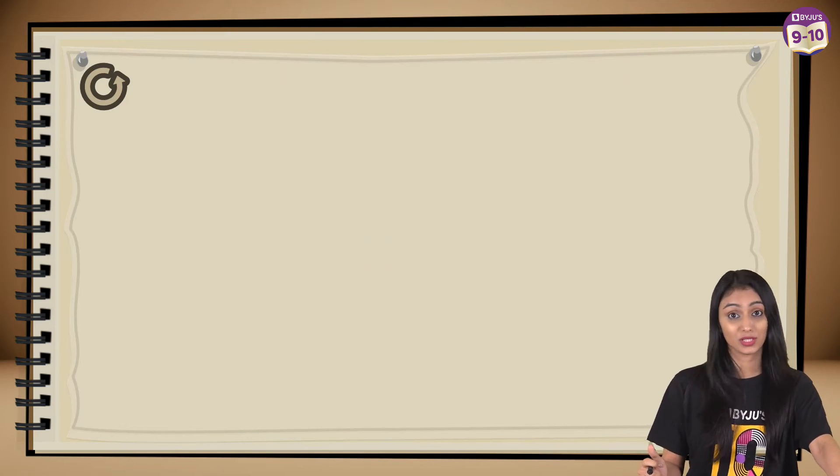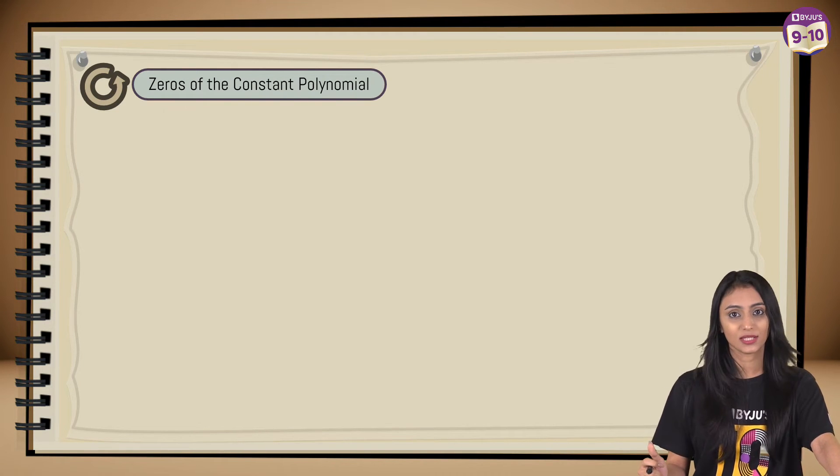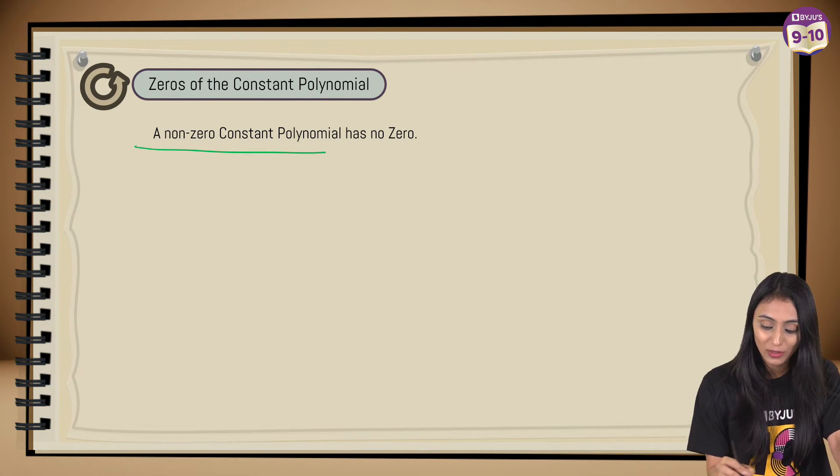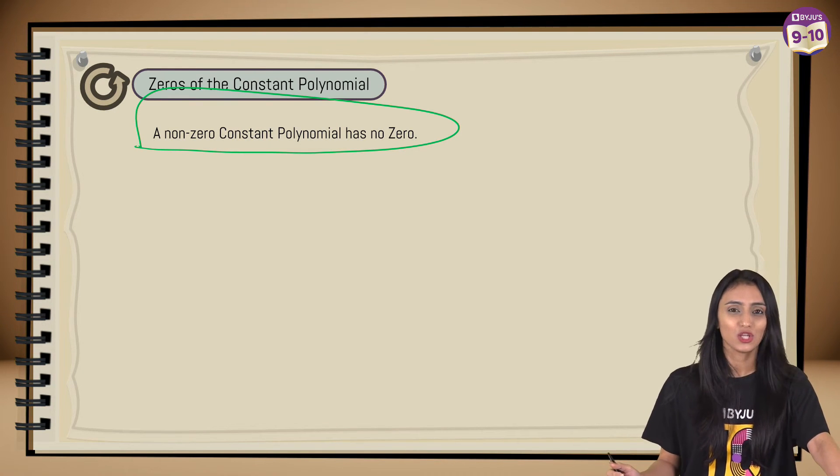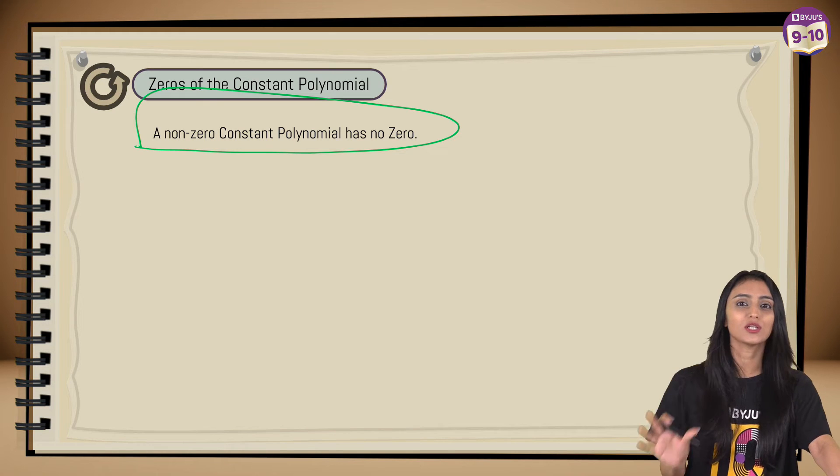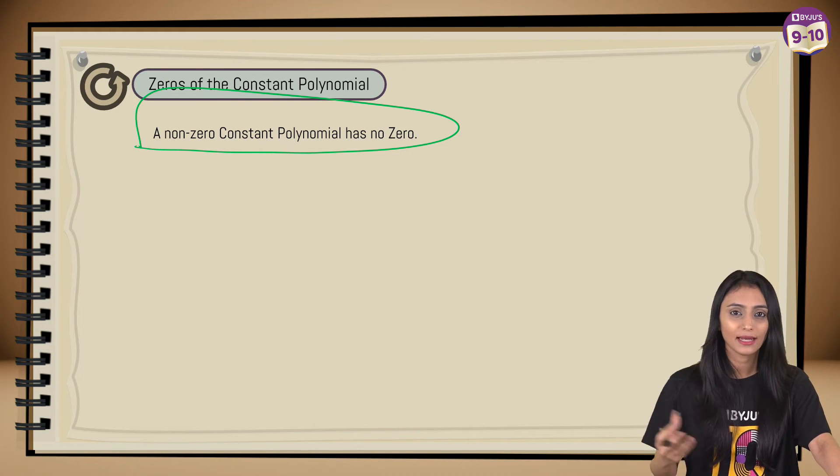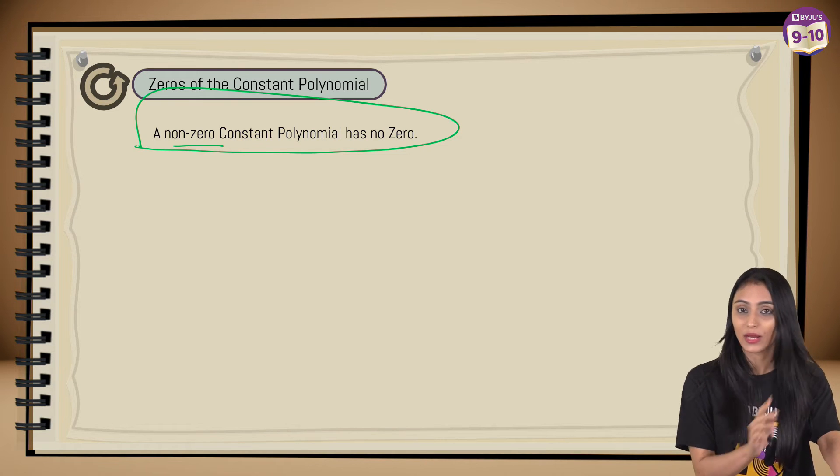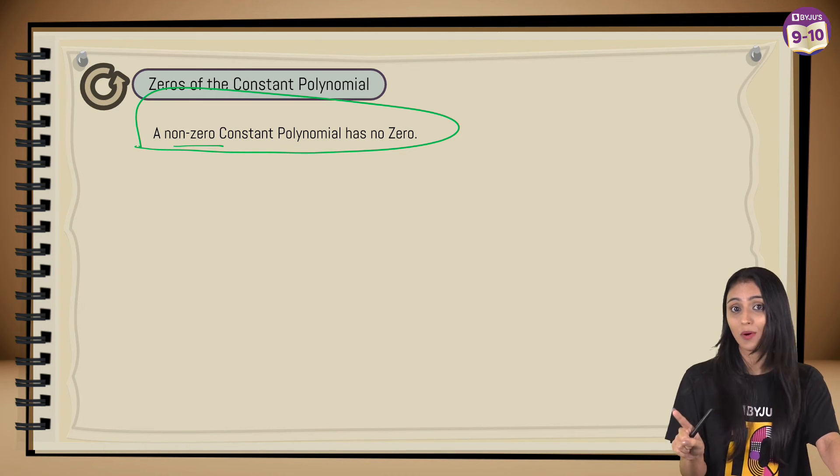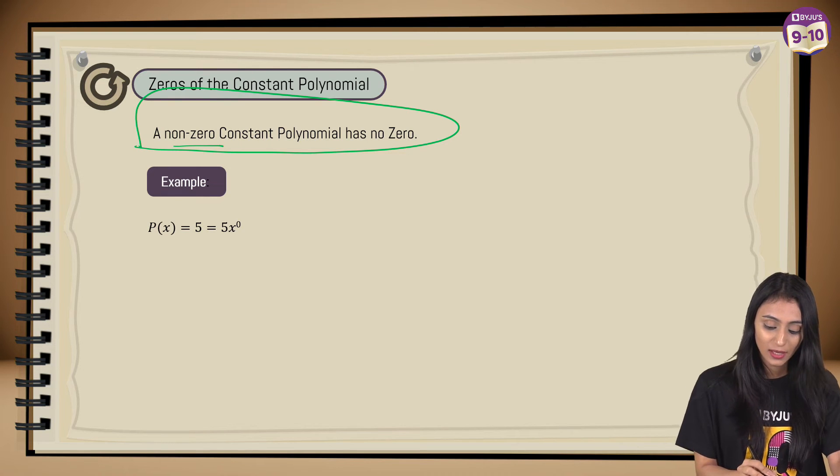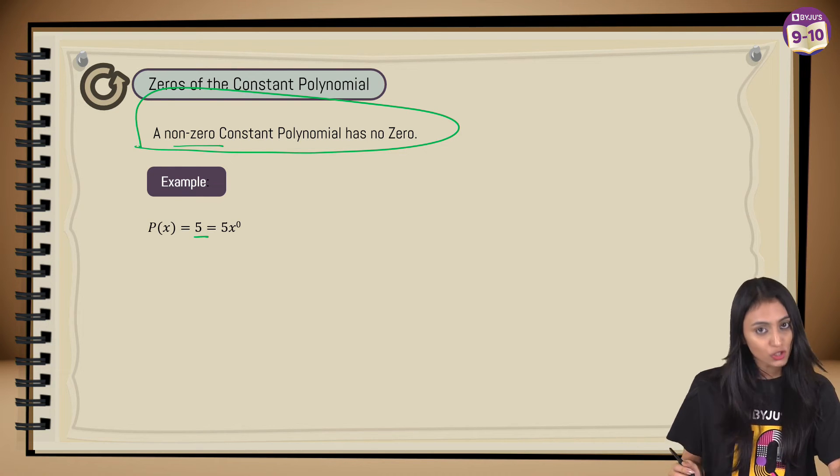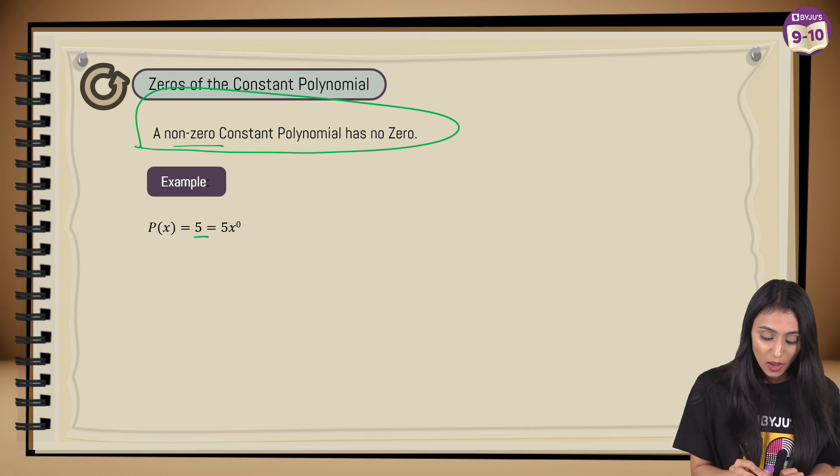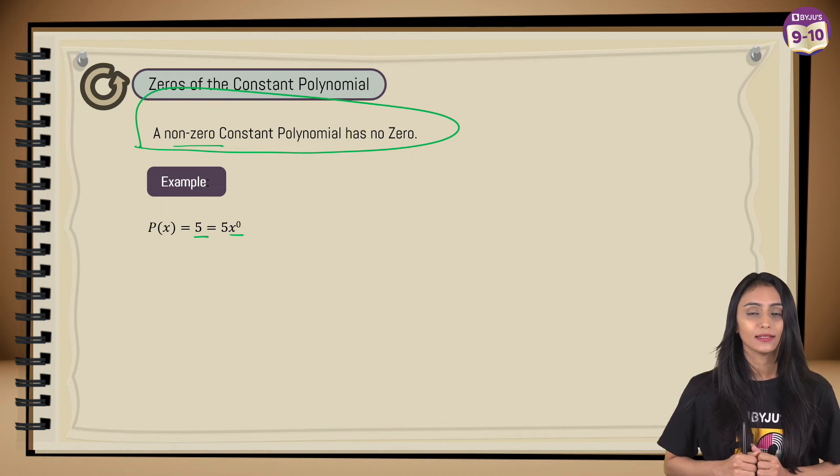Moving to another interesting concept: zeros of the constant polynomial. Here also maximum students get confused. So a non-zero constant polynomial has no zero. Non-zero constant polynomial. We know what constant polynomial is. Let's suppose I've got 10, I've got -10, I have got 25, right? And non-zero, it doesn't have to be zero. We are not talking about zero over here. So let's suppose we have got a polynomial p(x) that is 5. It's a non-zero, zero is not there, it's a constant polynomial.